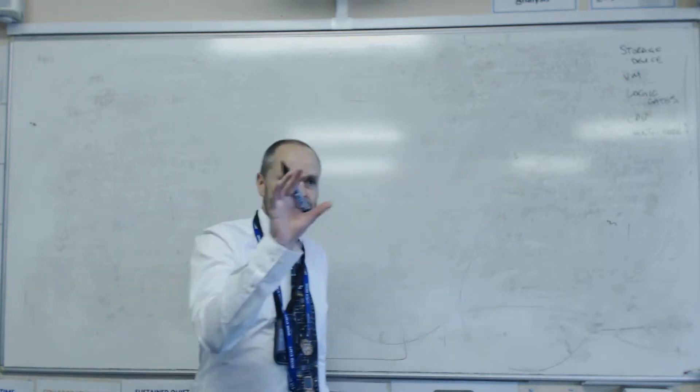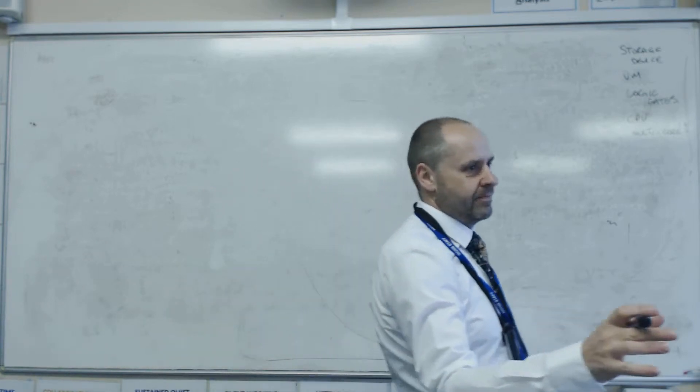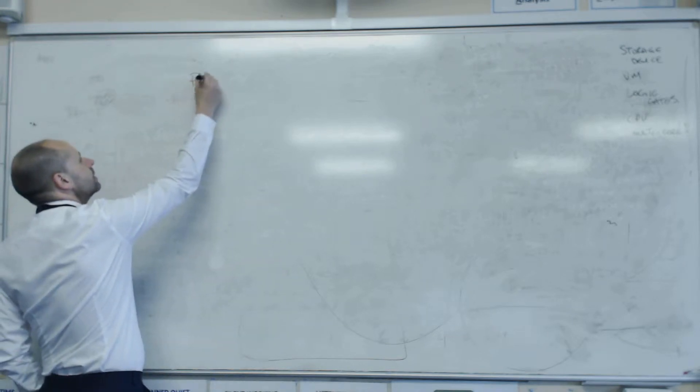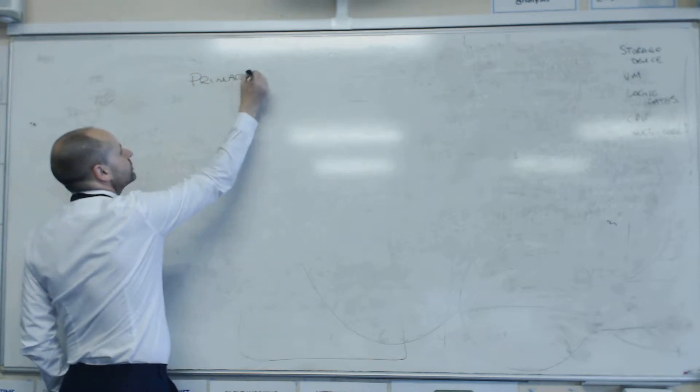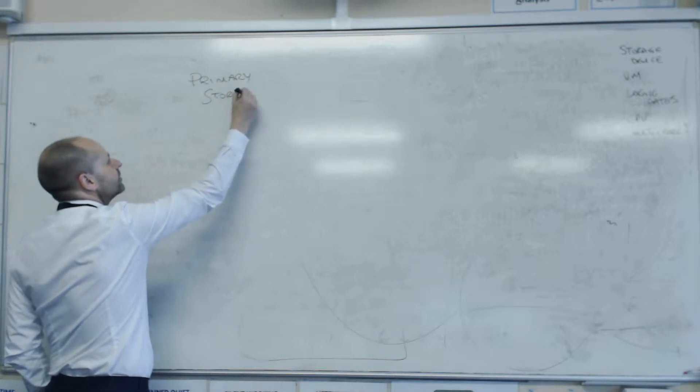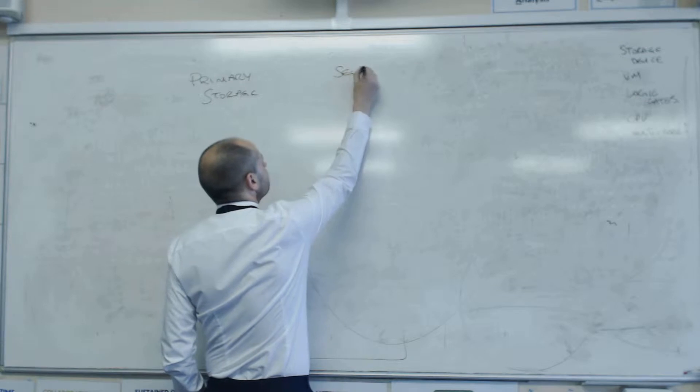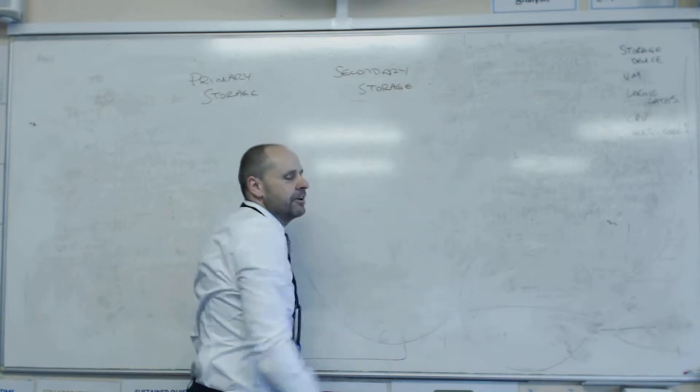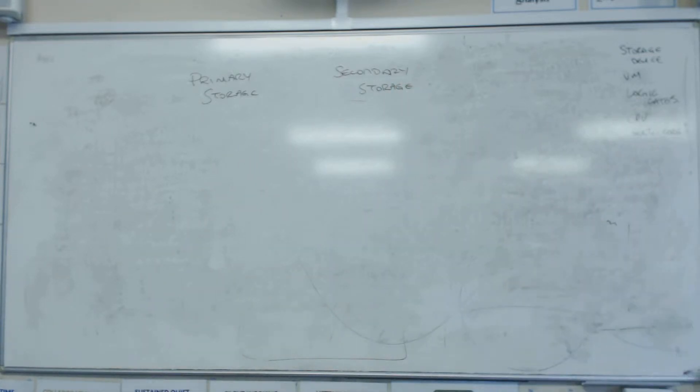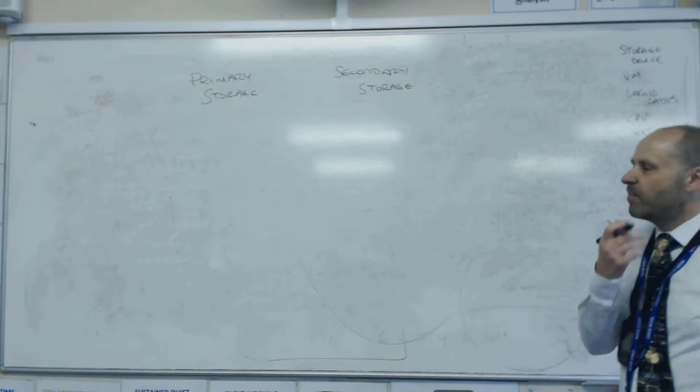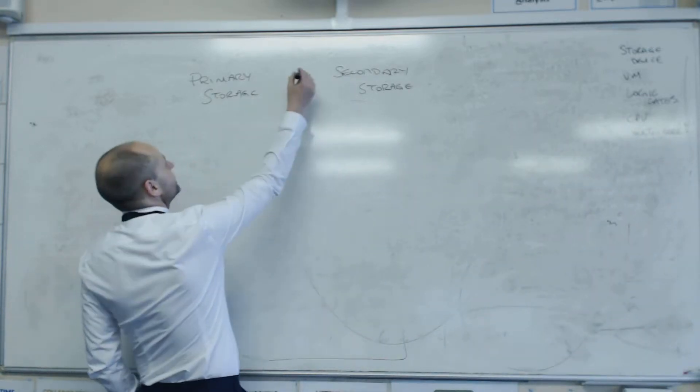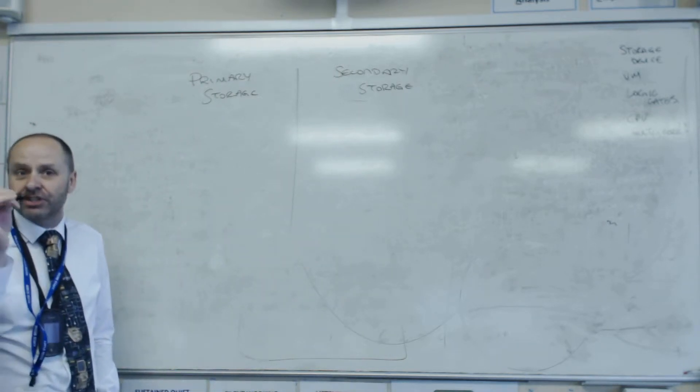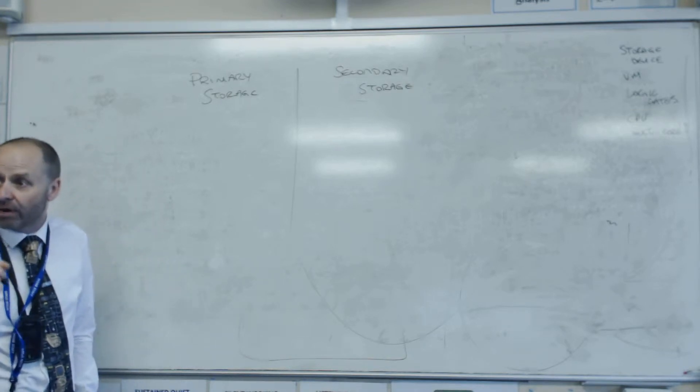Okay, so storage devices - it's really important that we are aware of the difference. We have something called primary storage and we have something called secondary storage. They're fundamentally the same thing, they store binary data for us, but how they work there is one massive fundamental difference. Primary storage is the only storage that the CPU can access. That's why it's called primary storage.